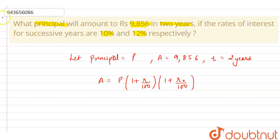Because here we are given that for successive years the rate is 10%, that means R1 equals 10% and R2 equals 12%.